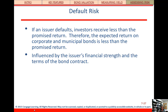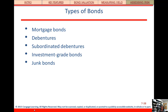Back to risks: default risk is the possibility that the issuer will default on their interest or principal payments. We measure the likelihood of default risk using bond ratings. Other bond types include mortgage bonds, debentures, subordinated debentures, investment grade bonds, and junk bonds — some based on the pecking order of who gets paid first in liquidation, how the bond is secured, or the credit quality of the issuer.